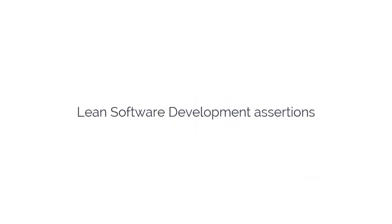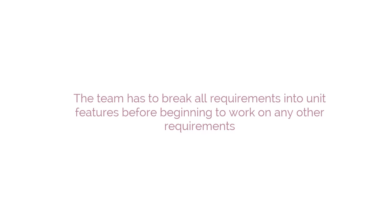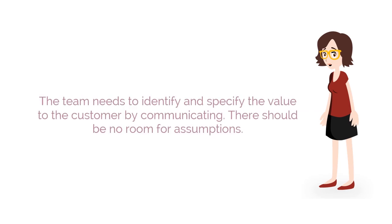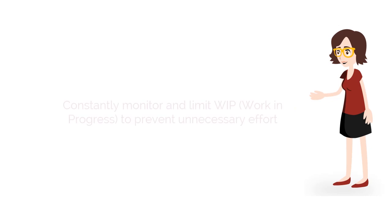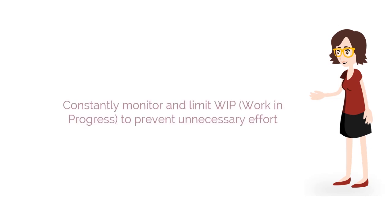Now we will learn about the lean software development assertions. The team has to break all requirements into unit features before beginning to work on any other requirements. The team needs to identify and specify what is of value to the customer by communicating with the customer. There should be no room for assumptions. Build what is necessary. If there is anything that is specified but not reasonable enough to be deployed, then remove it.